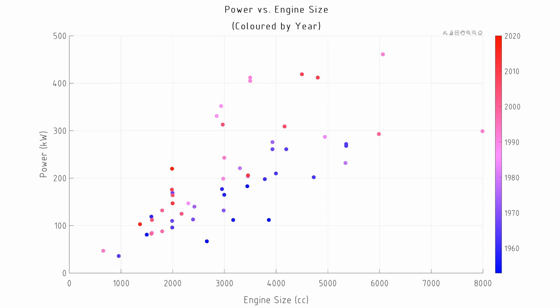We see this data coloured by year, and engine development over time has caused engines to become more powerful. If we just look at the two-litre region, we can see that in earlier times in the 1960s we would expect a two-litre engine to provide about 100 kilowatts, and now as we get closer to 2020 we see the same size engine reliably producing above 200 kilowatts. These are taken from sports cars, so they're a pretty good indication of a well-tuned, well-developed engine of that size.